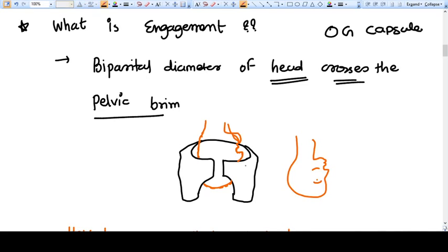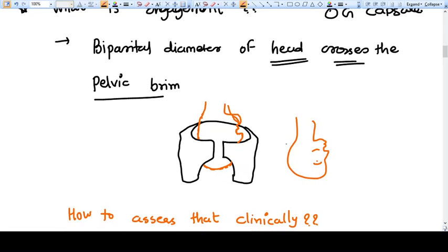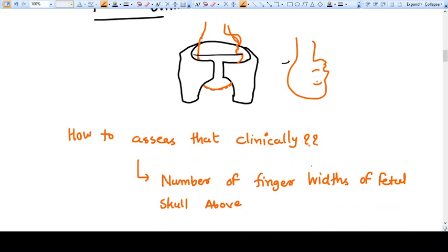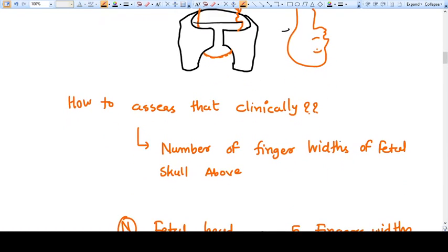The definition is: biparietal diameter of the head crosses the pelvic brim. So this is the pelvis, this is the fetal head, and when the biparietal diameter crosses, it makes the engagement. Now how do you assess it clinically when you are posted in the labor room?